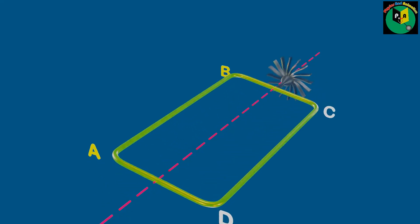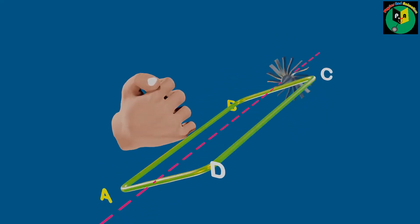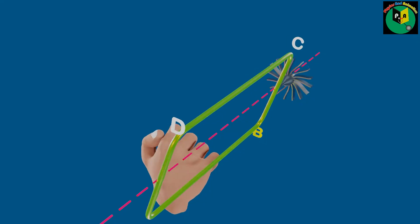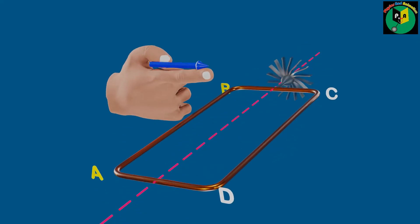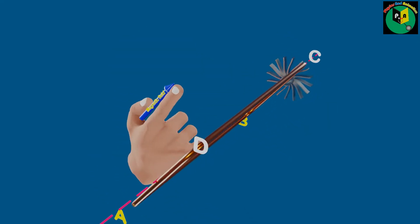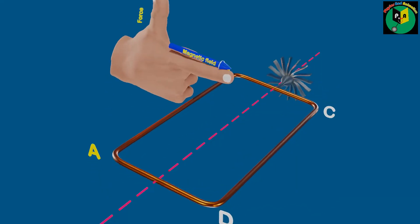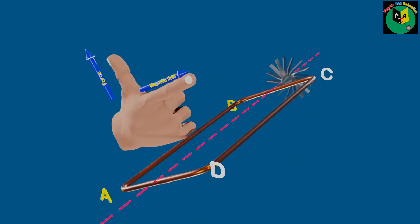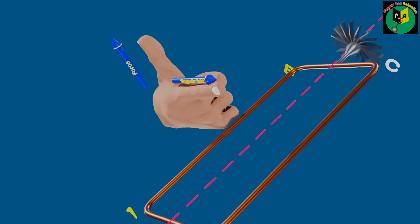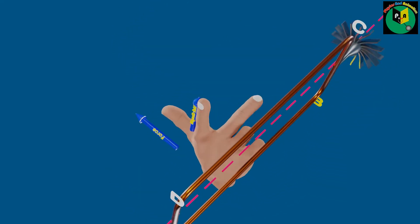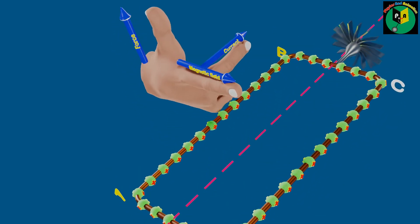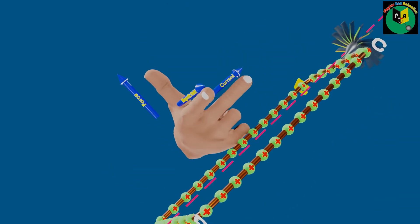In the arm AB, if we apply the right-hand Fleming's rule, in which the forefinger indicates the direction of a magnetic field, the thumb points in the direction of force acting on the coil, which is upward in this case. Then, the middle finger will indicate the direction of the current induced flowing from point A to point B.